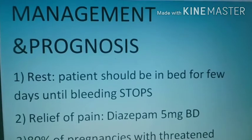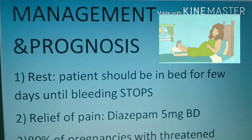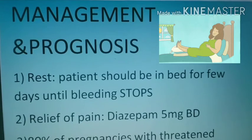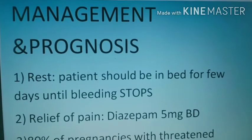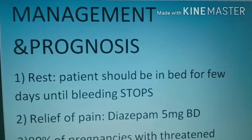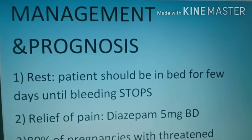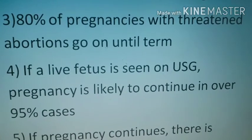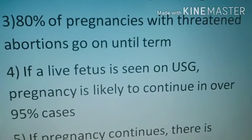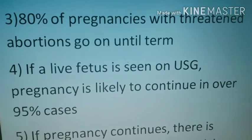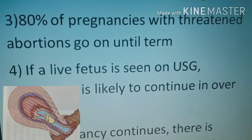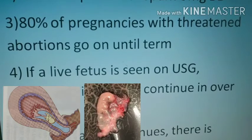Next is management and prognosis. Rest: the patient should be on bed rest for a few days until the bleeding stops. Next is relief of pain — diazepam is given at 5mg twice daily. Usually 80% of pregnancies with threatened abortion will go on until term, but in the rest it will either terminate as inevitable or missed miscarriage.